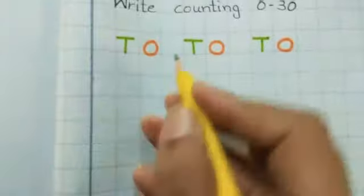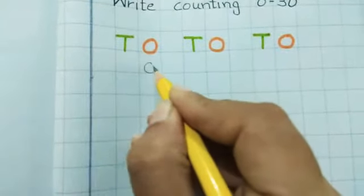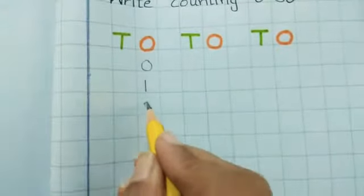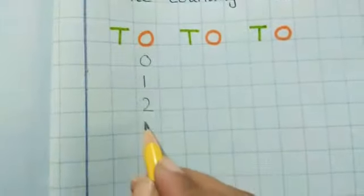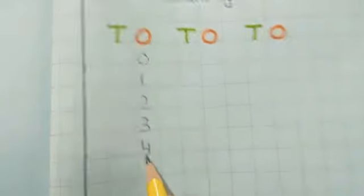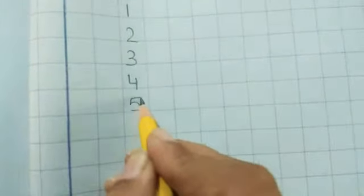So we will start writing from ones. 0, 1, 2, 3, 4, 5, 6, 7, 8, 9.